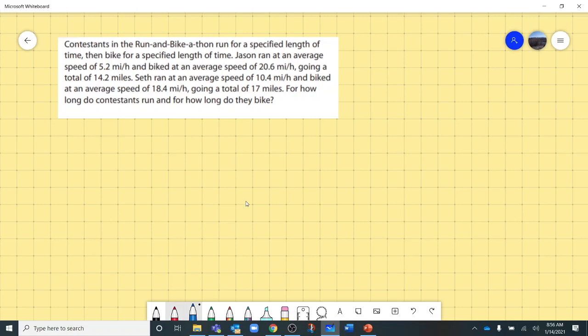We need to create two equations like we always do for these. We have our Jason equation. Jason ran at 5.2 miles per hour.